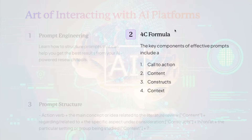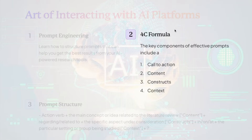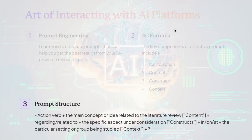In our research, there are two more important features we must include in any prompt: constructs and context. The construct is the arrangement of your variables — the outcomes of your research. You need to write what constructs you are looking for. The context includes specific details like country, age group, sector, or industry. Remember these four Cs: call to action, content, constructs, and context.